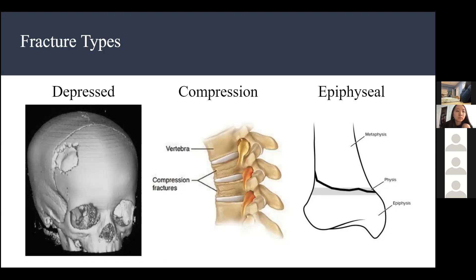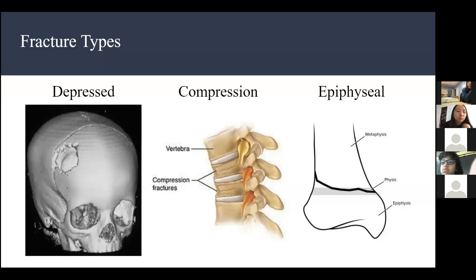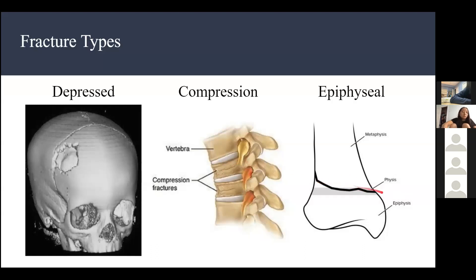Regarding softer bones at the epiphyseal plate: the instructor wasn't certain whether softer bones are inherently easier to break, but the epiphyseal fracture is common in children specifically because they have active growth at the epiphyseal plate, making that area more susceptible to fracture.